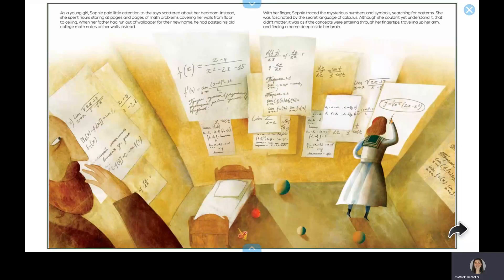With her finger, Sophie traced the mysterious numbers and symbols, searching for patterns. She was fascinated by the secret language of calculus. Although she couldn't yet understand it, that didn't matter. It was as if the concepts were entering through her fingertips, traveling up her arm, and finding a home deep inside her brain.